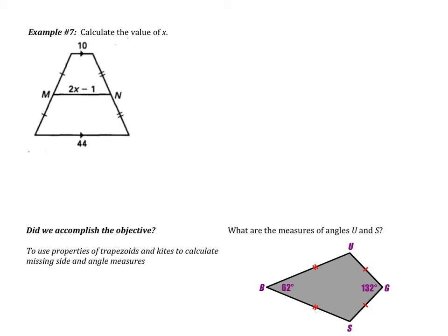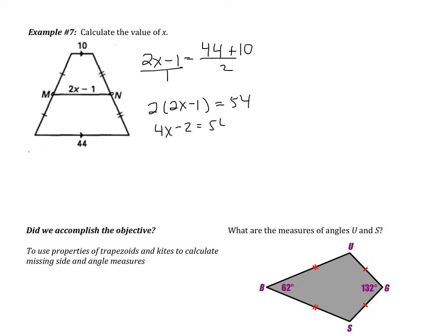Let's see how we did. MN is a mid-segment since M and N are both midpoints. The mid-segment 2X minus 1 equals the average of the bases: 44 plus 10 over 2. So 2 times (2X minus 1) equals 54. Distributing gives 4X minus 2 equals 54, so 4X equals 56, and X equals 14.